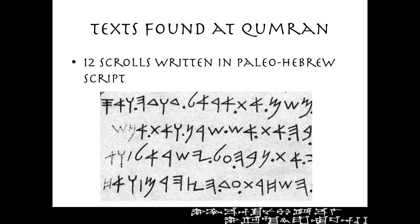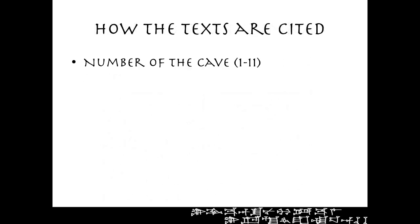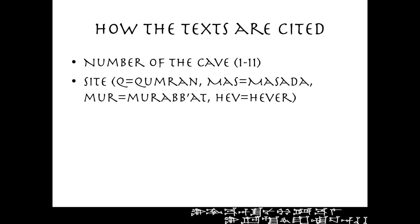During your work as a text critic, when you see texts cited from Qumran you can identify and understand what the citation means if you understand how they refer to these texts. They refer first to the number of the cave in which the scroll or text fragment was found, then a letter: Q for Qumran, Mas for Masada, Mur for Murabba'at, and Hev for Haver. Then the name of the biblical book is provided.